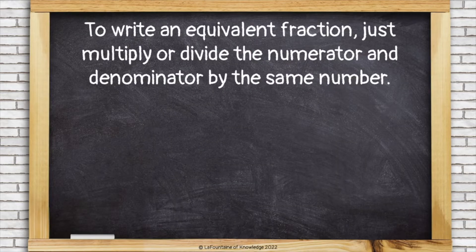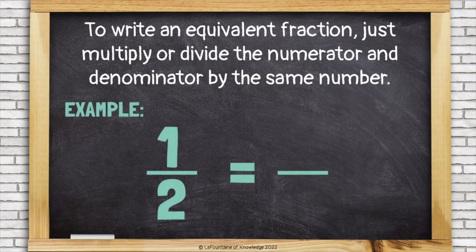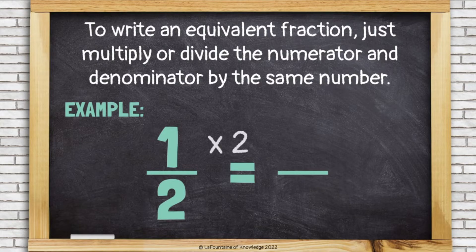To write an equivalent fraction, just multiply or divide the numerator and denominator by the same number. For example, if I want to create a fraction that's equivalent to one-half, I just need to multiply the numerator and denominator by the same number. You can pick whatever number you want. I'm going to multiply by two.